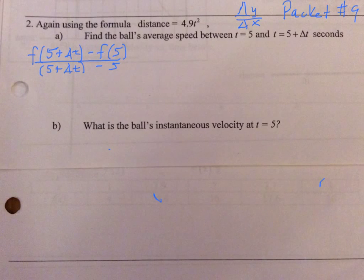This is packet 9, number 2, and we're trying to find the average speed between t equals 5 and t equals 5 plus delta t, so just a split second passed when t is 5.